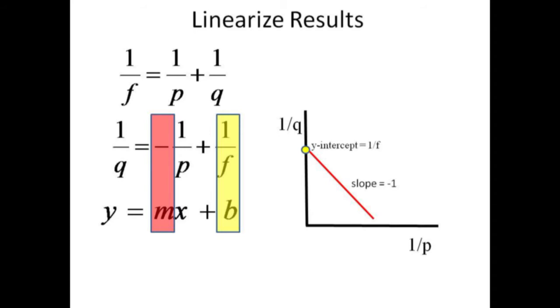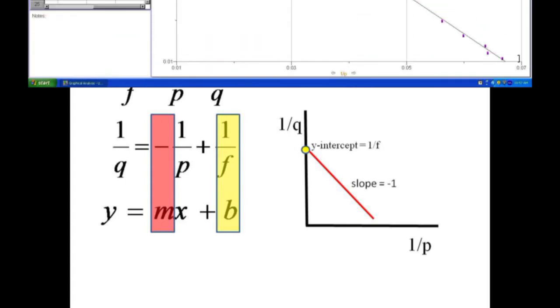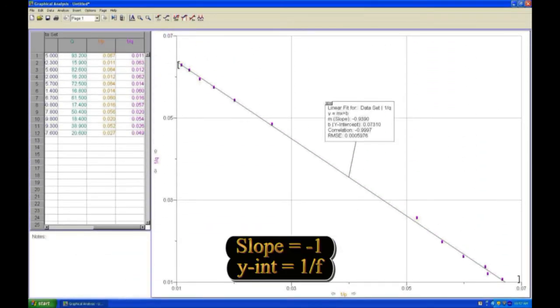The slope should be negative 1 and the y-intercept is the inverse of f. Here is our plot of 1 over q versus 1 over p with a linear fit. The inverse of the y-intercept should be compared with the focal length of the lens.